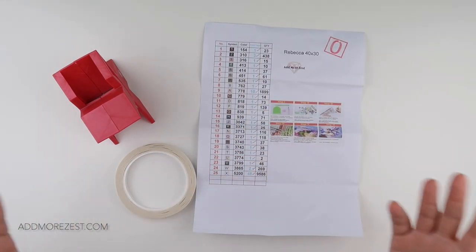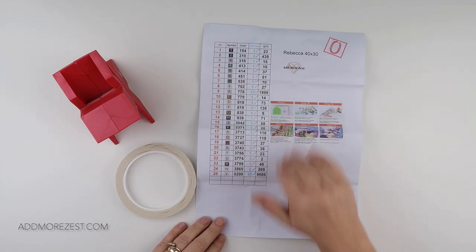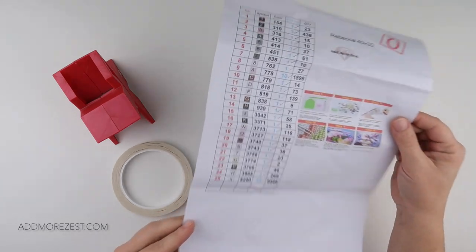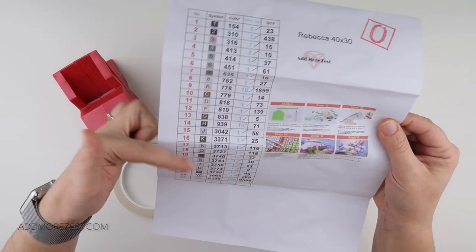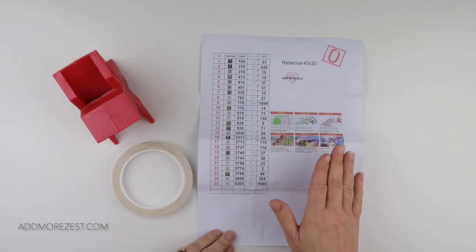Now not all diamond paintings come with an inventory sheet like this one does. This one comes with a list of symbols and comes with a list of numbers already done for me.